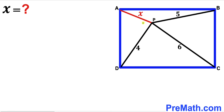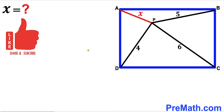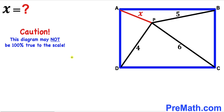Welcome to pre-math. In this video we have four segments AP, BP, CP and DP fully confined in a rectangle ABCD as shown in the diagram. Segment AP is represented by x, segment BP is 5 units, segment CP is 6 units, and segment DP is 4 units. Our task is to find the value of x — the length of segment AP. Please don't forget to give a thumbs up and subscribe. Note that this figure may not be 100% true to scale. Let's get started.